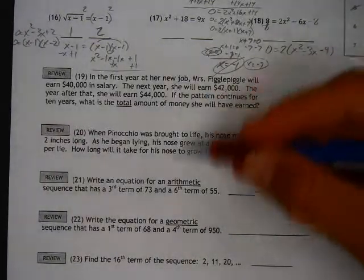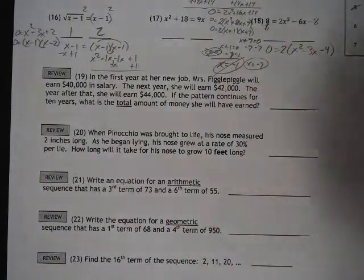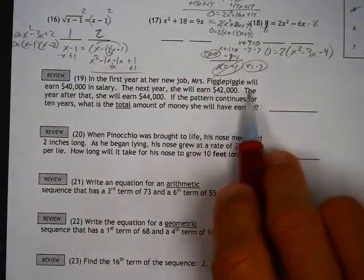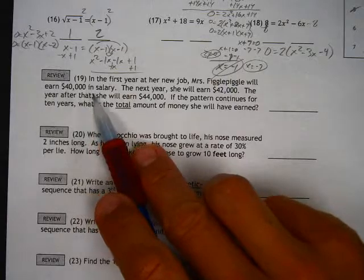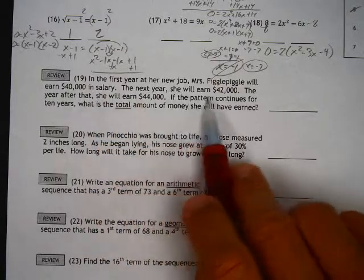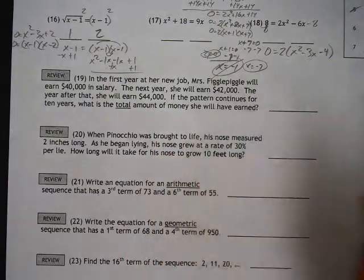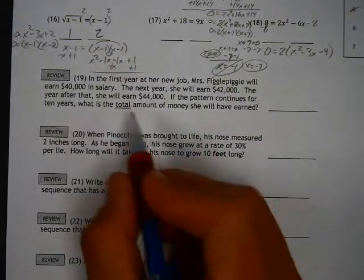It's extremely important to be able to read these two problems and see the difference. The first year at a new job, Ms. Figgle-Piggle earns $40,000 in salary, not too bad. Next year she will earn $42,000 and the following year she will earn $44,000. If the pattern continues for 10 years, what's the total amount of money she will have earned?